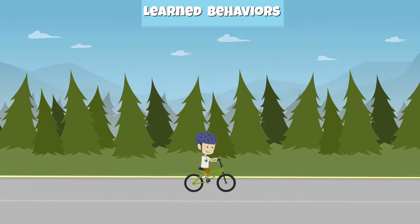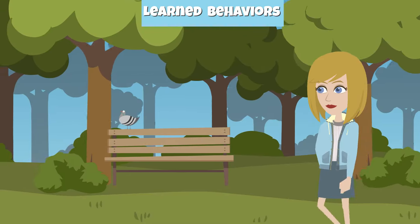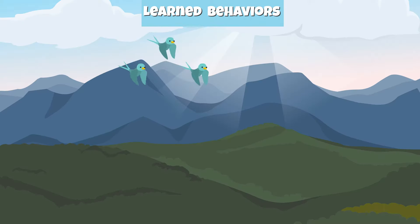Some behaviors learned are riding a bike, reading a book, walking, a dog responding to its owner when it is called, and the ability to fly. See you next time.